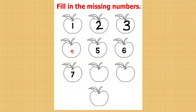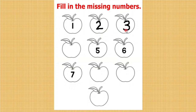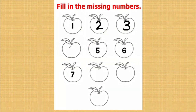Here the number is missing. What comes after 3? To fill this number, you have to keep 3 in your mind and do the forward counting from 1. 1, 2, 3, 4. What comes after 3? 4. Let us write. After 3, 4 will come.